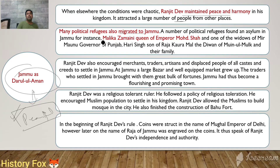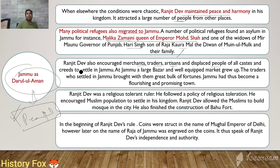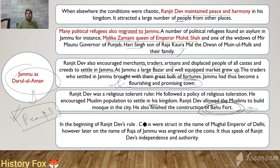Among those who found refuge in Jammu were Malika Zamani, Queen of Mughal Emperor Muhammad Shah, and others connected with the Punjab. Ranjit Dev also encouraged merchants, traders, artisans and displaced people of all castes and creeds to settle in the Jammu region. A large bazaar and well-equipped market grew up, and Jammu became a flourishing and promising town. He allowed Muslims to build mosques in the city and also finished the construction of Bahu Fort. Coins were initially struck in the name of the Mughal Emperor of Delhi, but later the Raja issued coins in his own name.